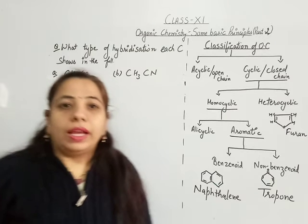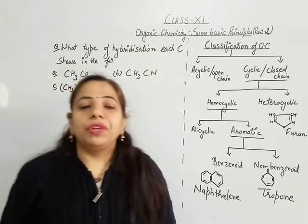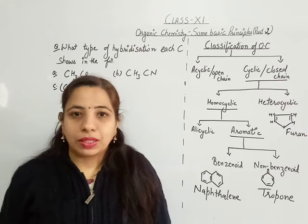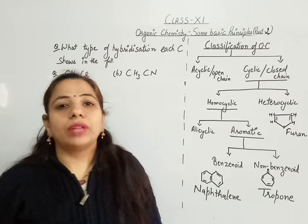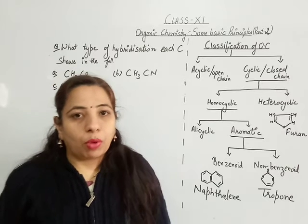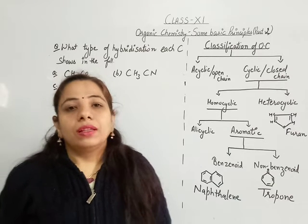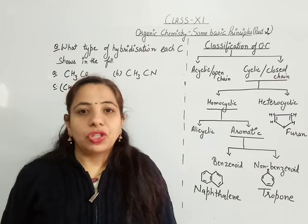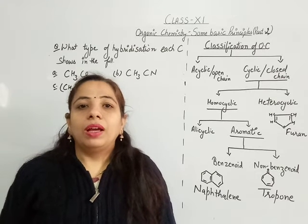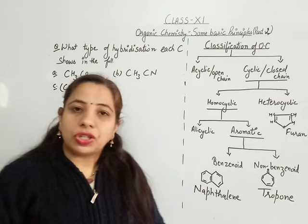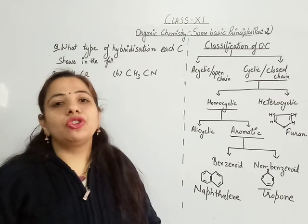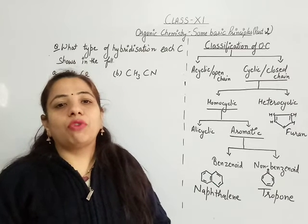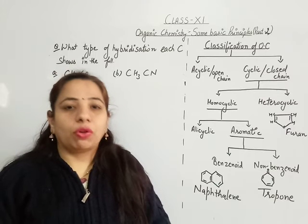Hello learners. In the previous video we discussed about organic compounds — how they come into existence, how scientists came to know they can be prepared in laboratories, the reason for their abundance, the ways by which they get formed, how many types of hybridizations carbon can show, and the different ways to represent the formula of molecules.